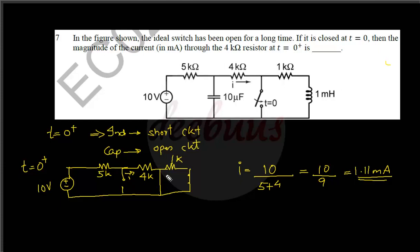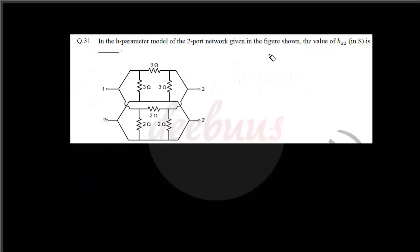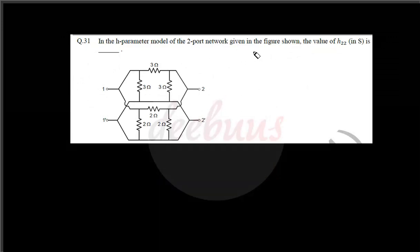The 1 kΩ resistor is bypassed by the short circuit from the inductor, so it does not factor into the current calculation. The answer is 1.11 mA.